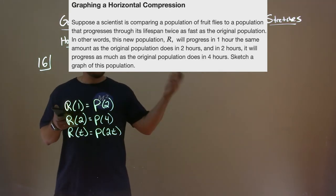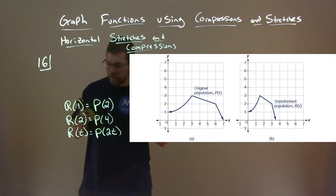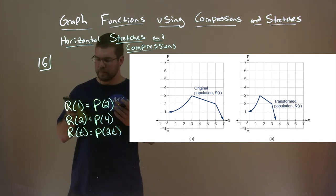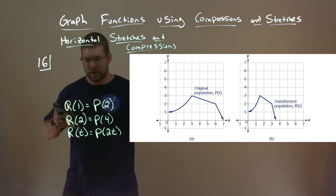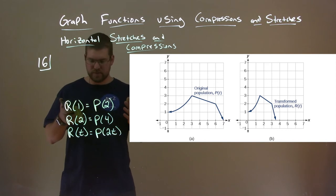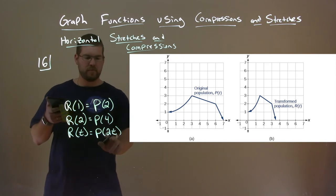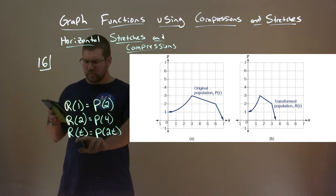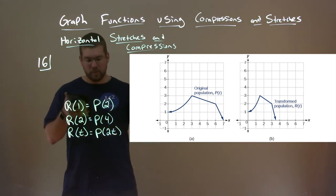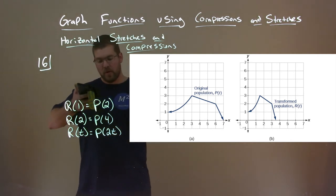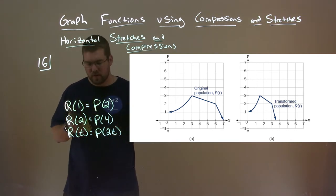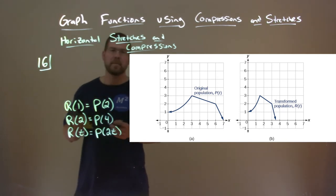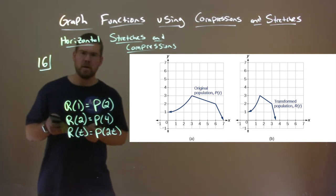Let's look at this graph. We have our original population p of t. We're compressing that horizontally — we have 2 there, a value greater than 1. And that is r of t. The whole graph is being compressed horizontally.